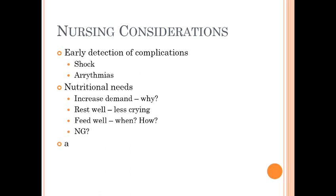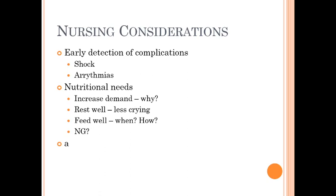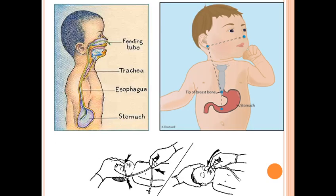Cyanosis presents as cyanotic lips and club fingers. Murmurs can vary in intensity and change with position. Nursing considerations include early detection of complications such as shock and arrhythmias. Nutritional needs are increased in these patients, who must feed well. Nurses should know when and how to use NG tube care. The procedure for placing an NG tube is also relevant nursing knowledge.